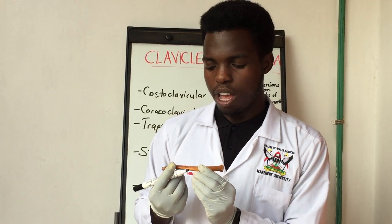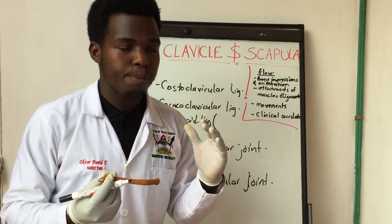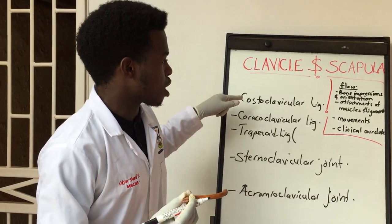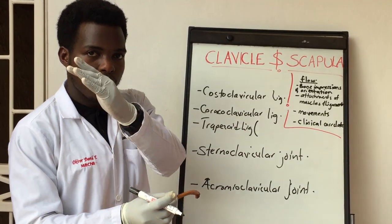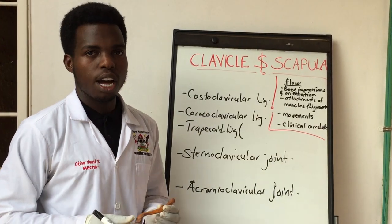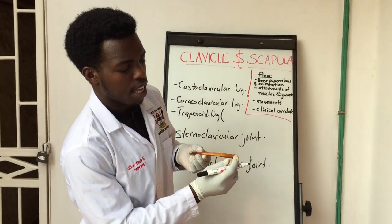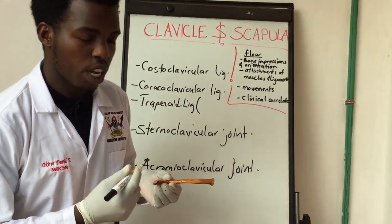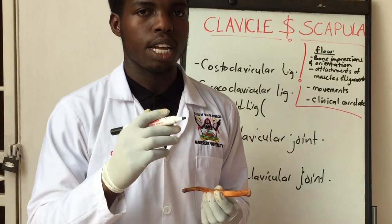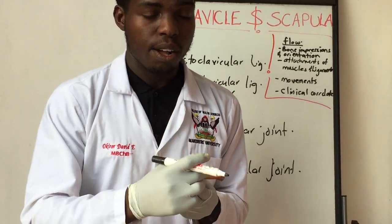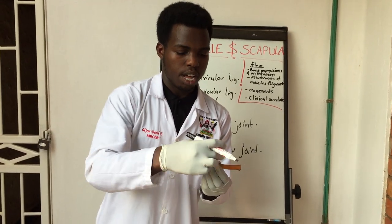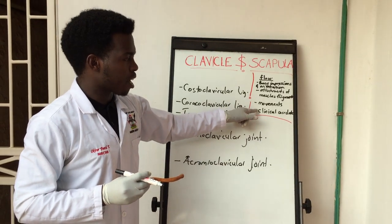Now let's look at the muscles that attach to the clavicle. We have already talked about the ligaments — the costoclavicular ligament, the coracoclavicular ligament, and the trapezoid ligament. For muscles: the pectoralis major has a clavicular head that attaches on the anterior surface of the clavicle. Also, the sternocleidomastoid muscle has a clavicular head that attaches at the medial aspect of the clavicle.